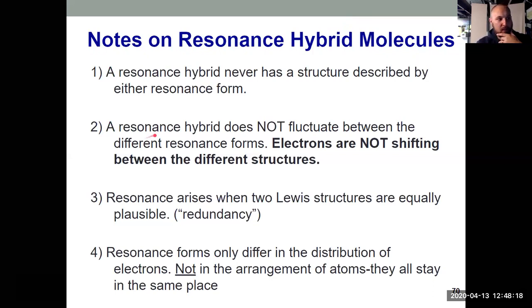And our resonance hybrid, the thing that actually exists, isn't flipping between the two. If you go and see a rhino at the zoo, it's not like it's spontaneously a dragon or a unicorn. It's always just one thing. Electrons aren't shifting around between the structures.